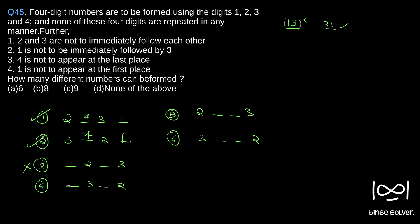In the next arrangement, 1 cannot appear at the first place, giving 4,3,1,2 — '3,1' is possible and '1,3' does not appear, so this is a valid case. Then for the next, 1 cannot appear first, giving 2,1,4,3 — this is a valid case. For the last arrangement, 1 can appear in a middle position, giving valid case 3,4,1,2. That makes cases five and six. Both 4,1 and 1,4 sub-cases here are valid.